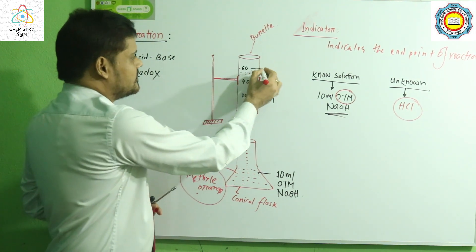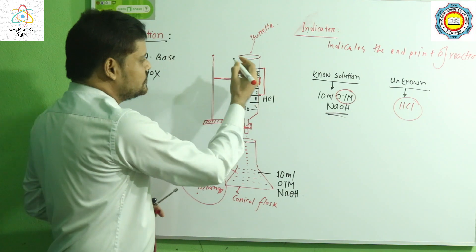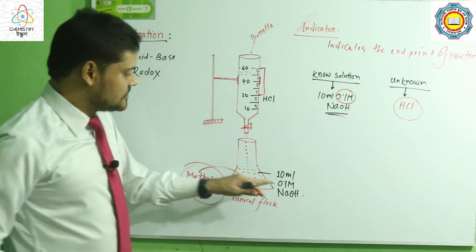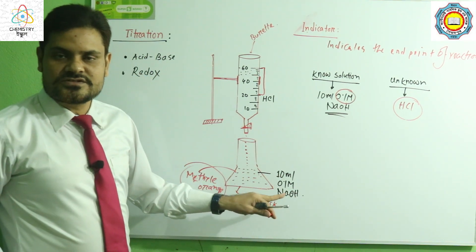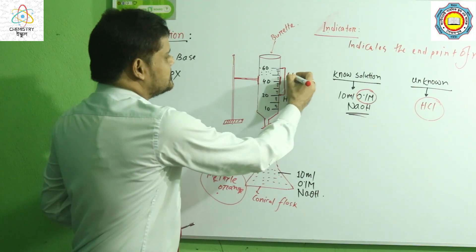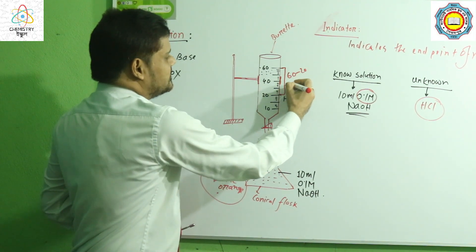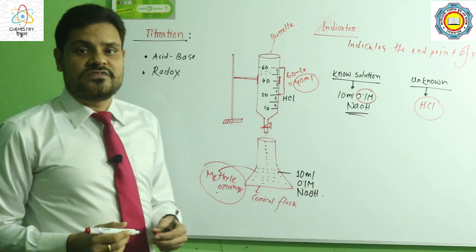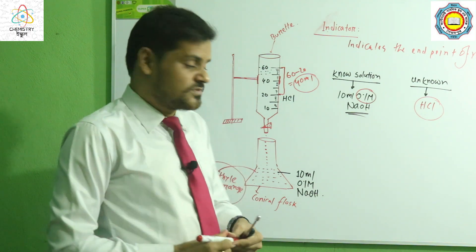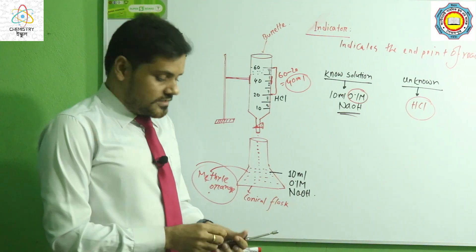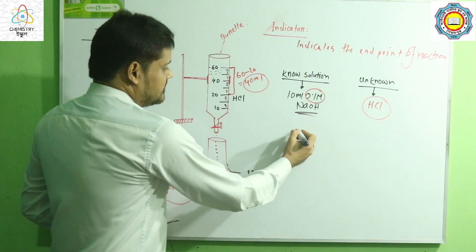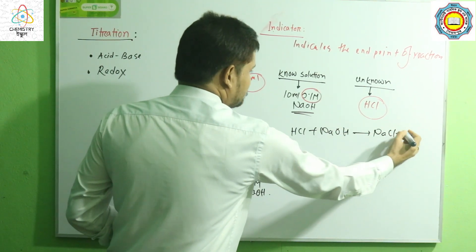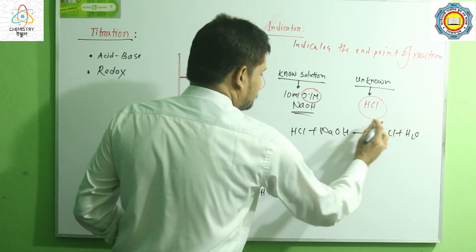Then we find out how much volume of HCl is needed to neutralize 10 milliliter of sodium hydroxide. From the burette reading, for example from 60 to 20, the needed volume is 40 milliliter. So 40 milliliter of hydrochloric acid is needed to neutralize the sodium hydroxide. The related reaction is: HCl + NaOH → NaCl + H₂O, forming salt and water.